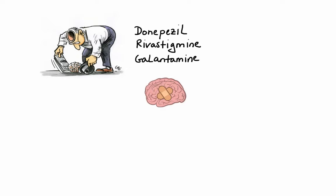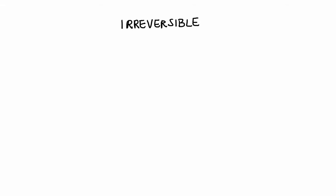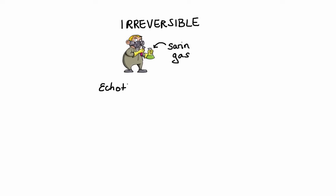Now, briefly covering the irreversible indirect acting agents: many of these drugs are extremely toxic and were developed by the military as nerve agents, the best example being sarin gas. The only agent you might still encounter in medical practice is echothiophate. Echothiophate forms covalent bonds with acetylcholinesterase, leading to very strong cholinergic stimulation. Its therapeutic use is restricted to treatment of open-angle glaucoma only, though it is rarely used due to its side effect profile.